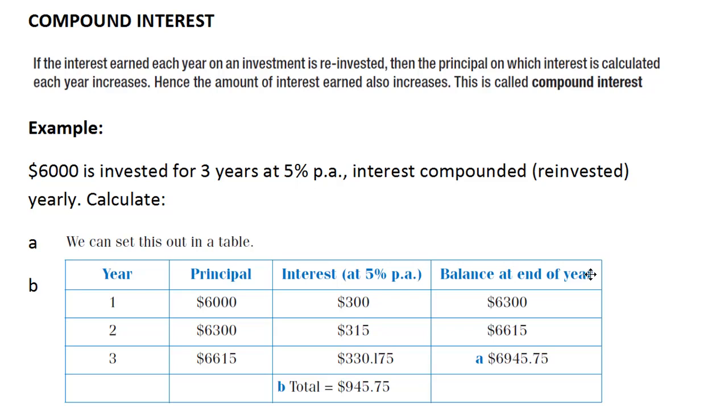In the first video lesson that we did on compound interest, we had a look at this particular question. $6,000 is invested for three years at 5% and the interest is compounded yearly. And the table that I gave at the end of that video lesson is shown below here.